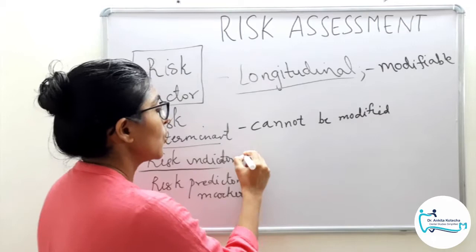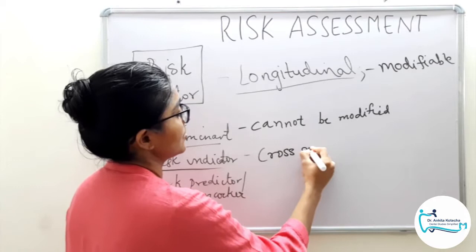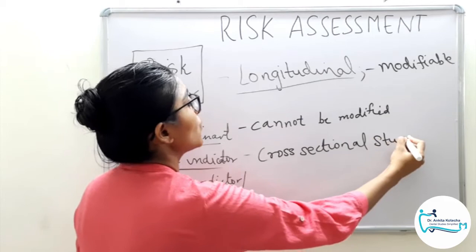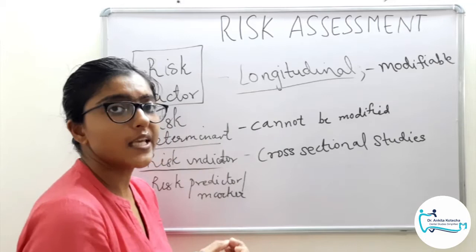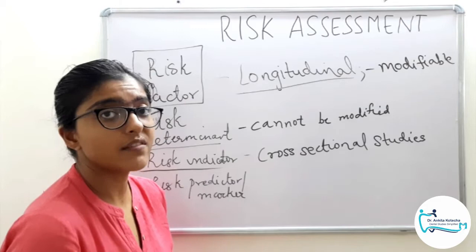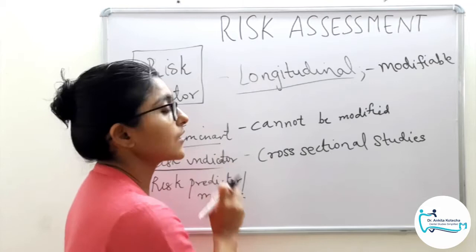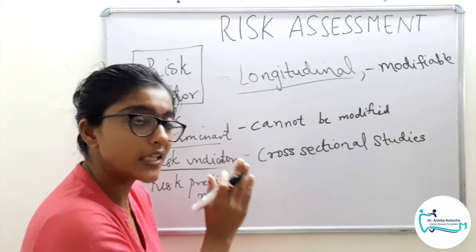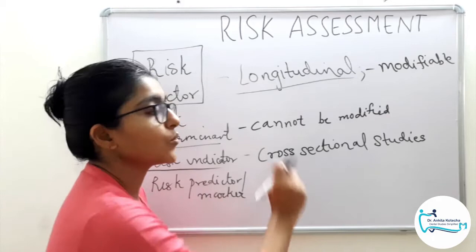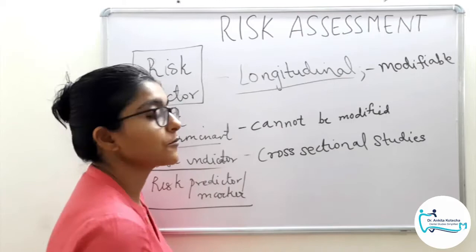Coming to the third terminology, Risk Indicators: the contrasting point here is that risk indicators are confirmed through cross-sectional studies and not longitudinal studies. Cross-sectional studies are one point-in-time studies. Examples include HIV, AIDS, osteoporosis, or even the frequency of past dental visits. Such factors are called risk indicators, confirmed only in cross-sectional studies, not longitudinal studies.